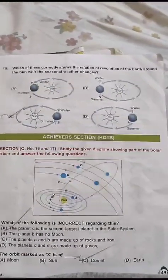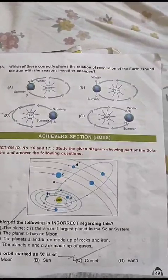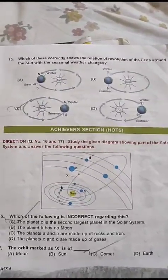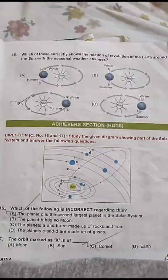Which of these correctly shows the relation of revolution of Earth around the sun with the sun? You're done.